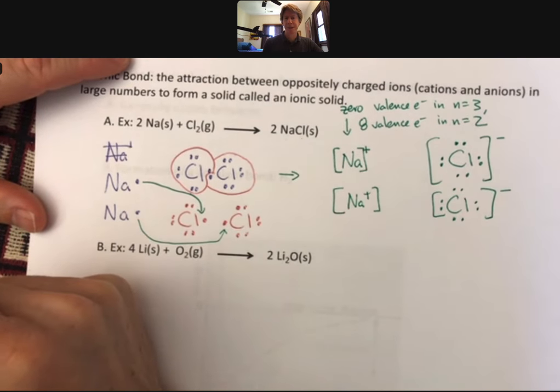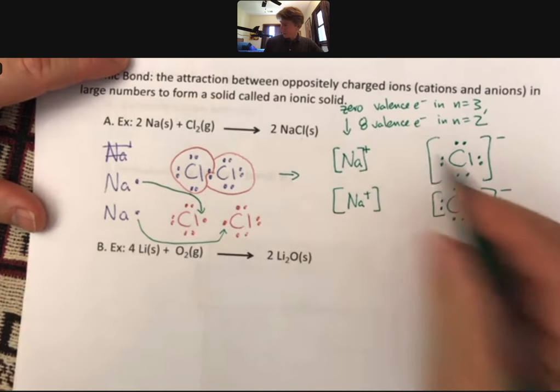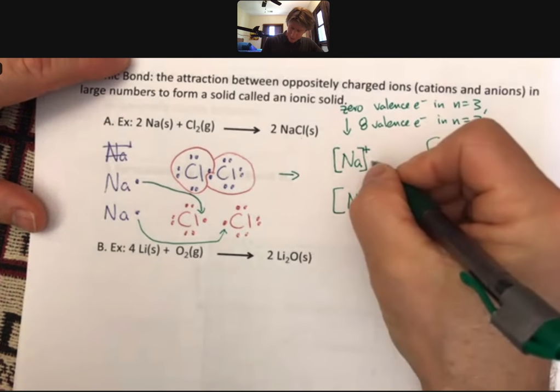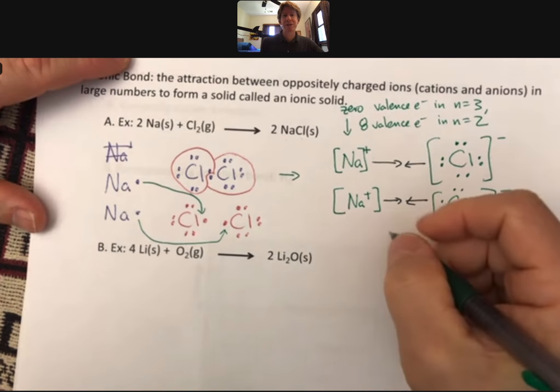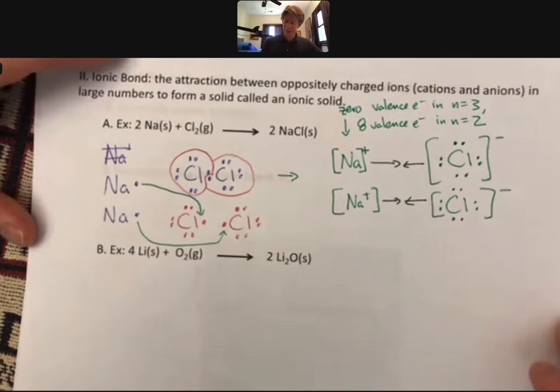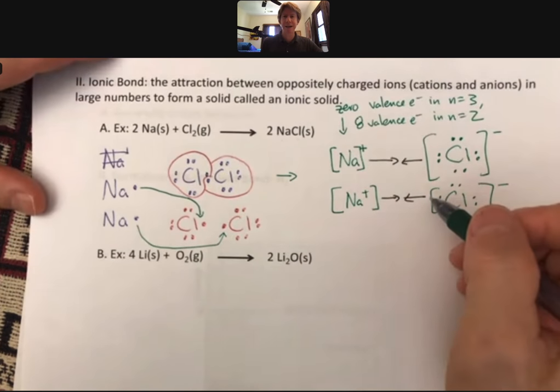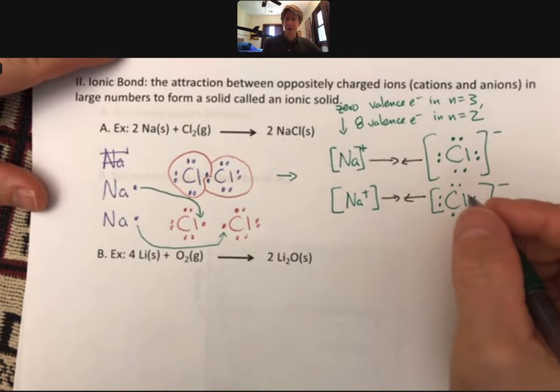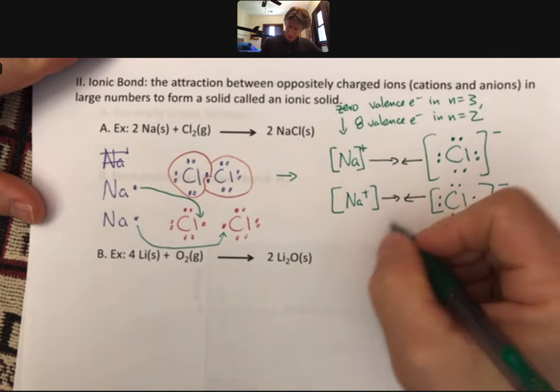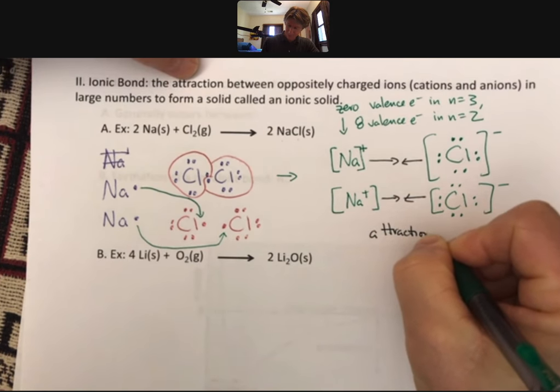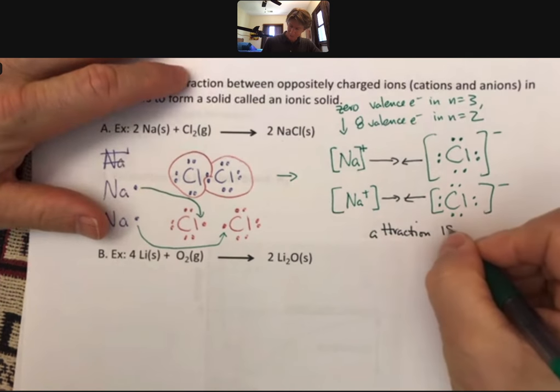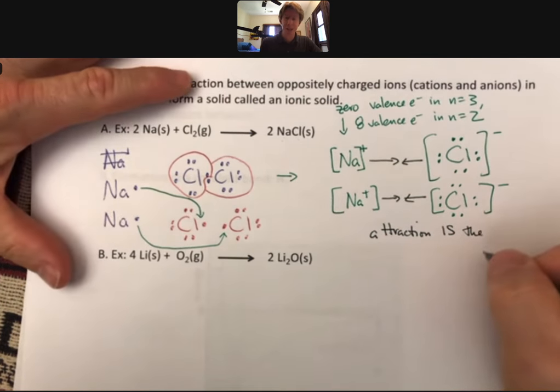What happens is that these are attracted to each other. This attraction between oppositely charged ions is what's called an ionic bond. The attraction, that's what it says right here - attraction is the ionic bond.